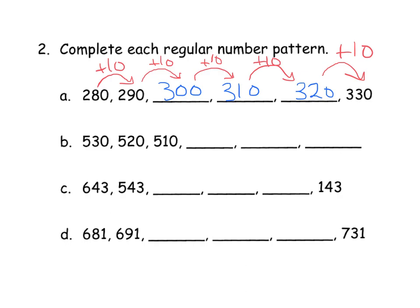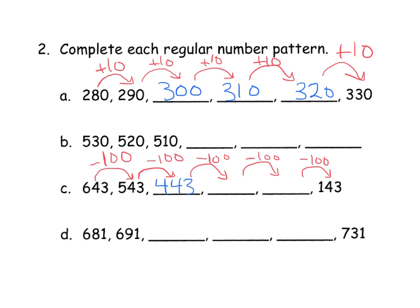Let's skip down to problem C. Going from 643 to 543 means we've gone down by 100 — we've lost a dot in the 100s column. So that means our pattern is we're always going to go down by 100. So 543 minus 100 gives us 443; 443 minus another 100 gives us 343; then 243. And here's our kicker — we know we did it right because 243 minus 100 gives us 143.